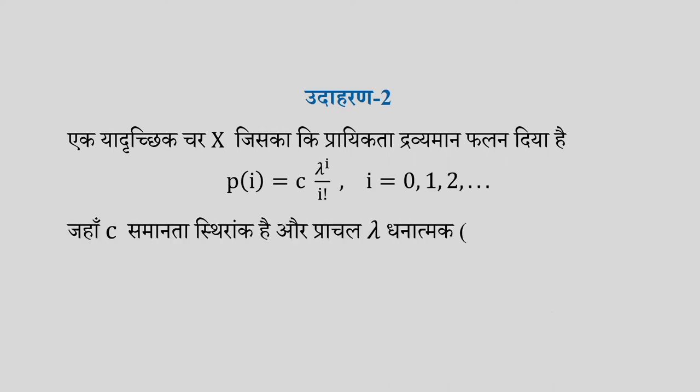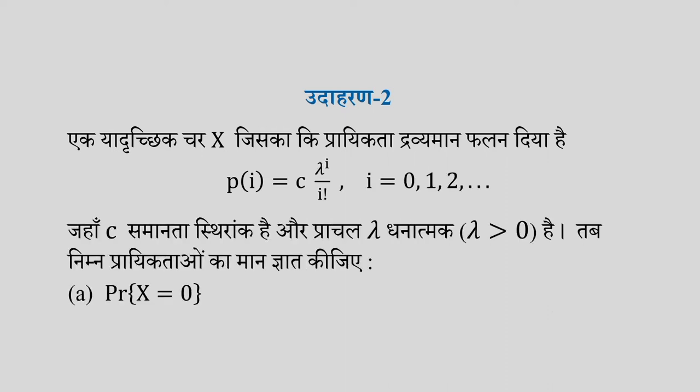The second example is this: This is a random variable X, for which the probability distribution is given. You can see that the random variable X has this probability distribution.